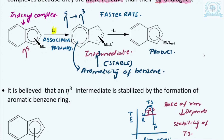This reaction is not taking place at the cost of the loss of aromaticity — this is also very important. The intermediate formation here is not at the cost of aromaticity. The aromaticity of the benzene ring is retained, and due to this retained aromaticity, there is much more stabilization of the intermediate. As I already mentioned, the more stable the intermediate, the faster the reaction will be.